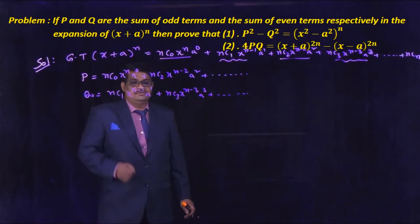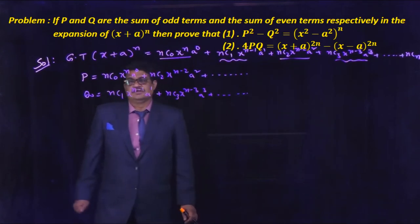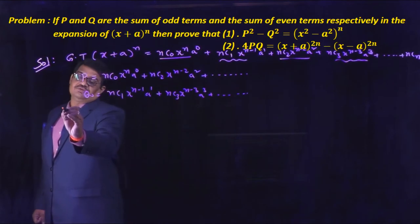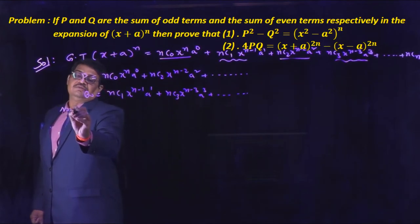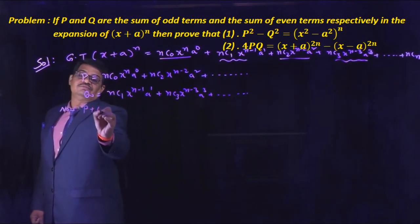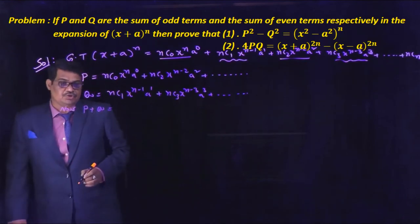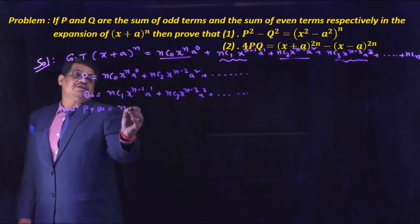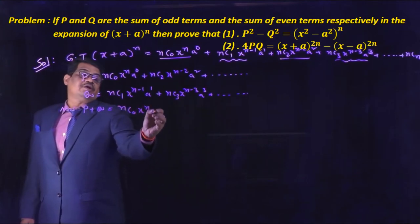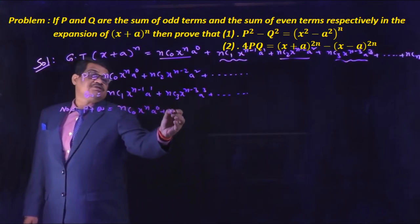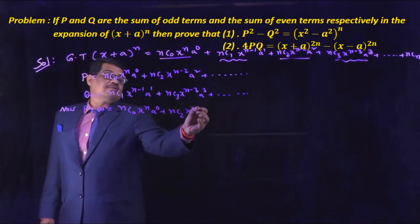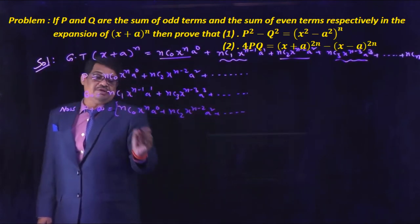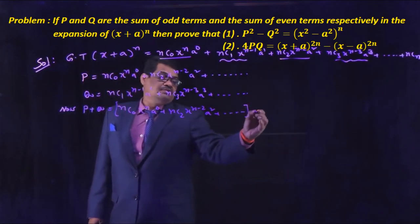Q is the sum of the even terms — the second, fourth, sixth terms and so on. Q = nC1·x^(n-1)·a^1 + nC3·x^(n-3)·a³ + ... and so on. These are the sum of the even terms and odd terms, that is P and Q.